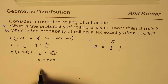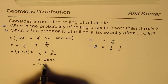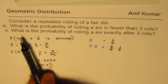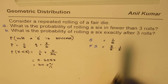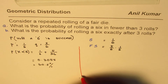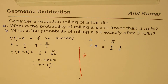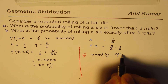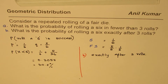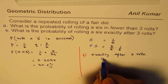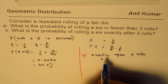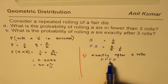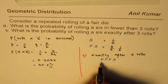Now let's do Part B: what is the probability of rolling a six exactly after three rolls? When we say exactly after three rolls, that means we have had three failures and then a success. So that means three failures followed by a success. That is what the probability is — it will be a product of these probabilities.